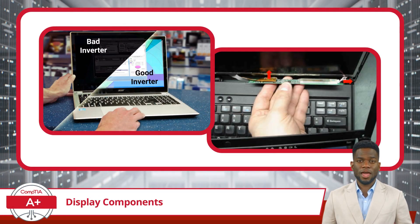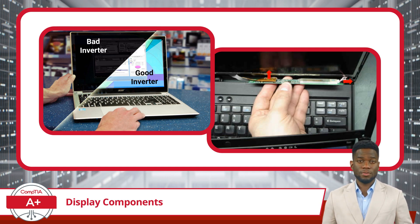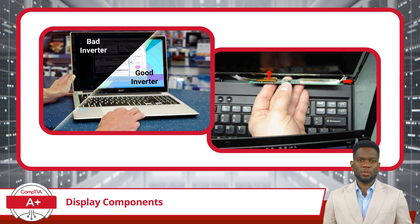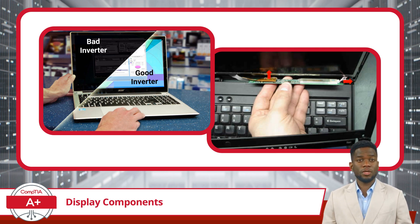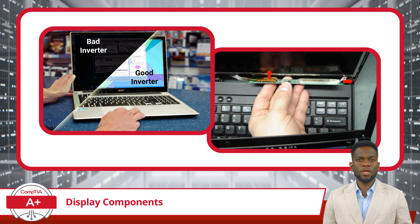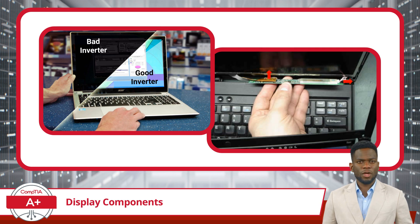Let's add one more component to the list: inverters. An inverter is primarily found in older laptop models. Its role is to convert the low-voltage DC power from the laptop's battery or power supply to the high-voltage AC power used in older, non-LED backlights. This power conversion process was essential for illuminating the screen. The inverter is usually placed at the bottom of the laptop screen, often within the screen bezel itself — a small, thin board that connects directly to the lower part of the LCD screen. With the advent of LED backlit displays, inverters have become obsolete.